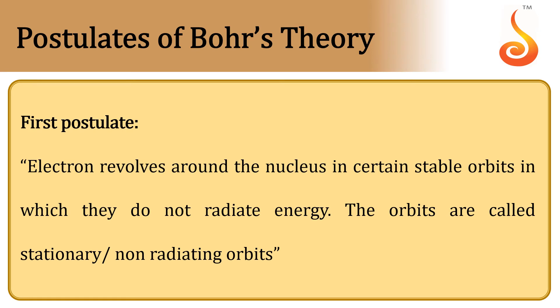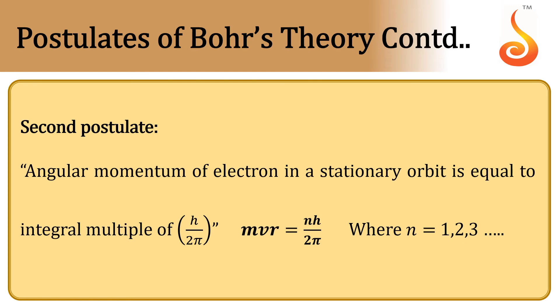The second postulate: Angular momentum of an electron in a stationary orbit is equal to an integral multiple of h/2π. That is, mvr = nh/2π, where n = 1, 2, 3, and so on.